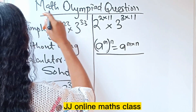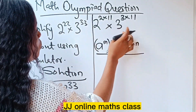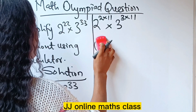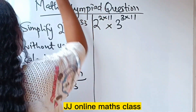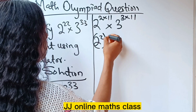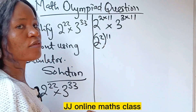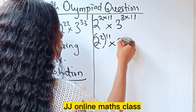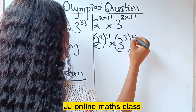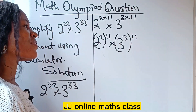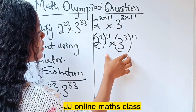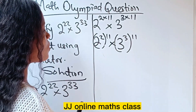Putting it in that form, we are going to have 2 to the power of 2, raised to the power of 11, times 3 to the power of 3, raised to the power of 11. It's becoming more interesting at this point!